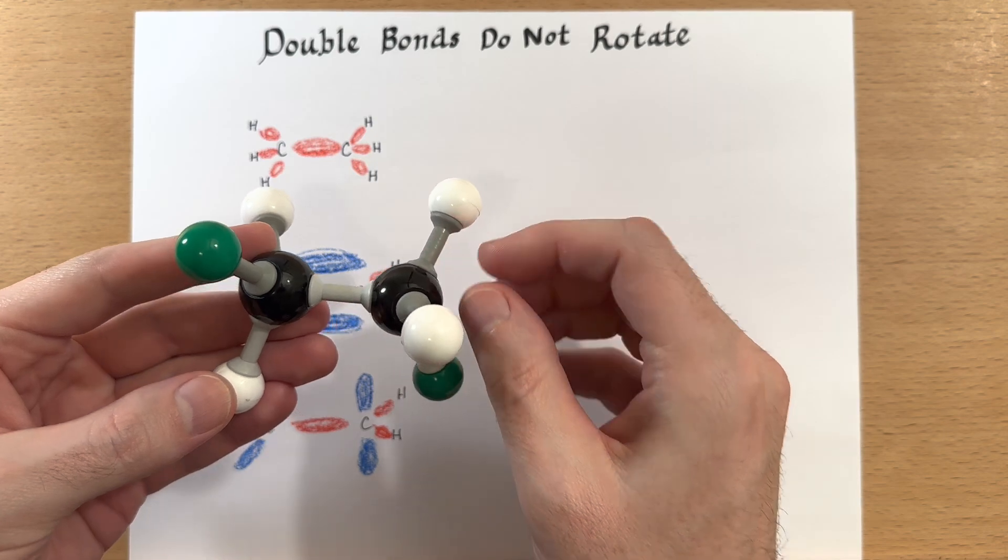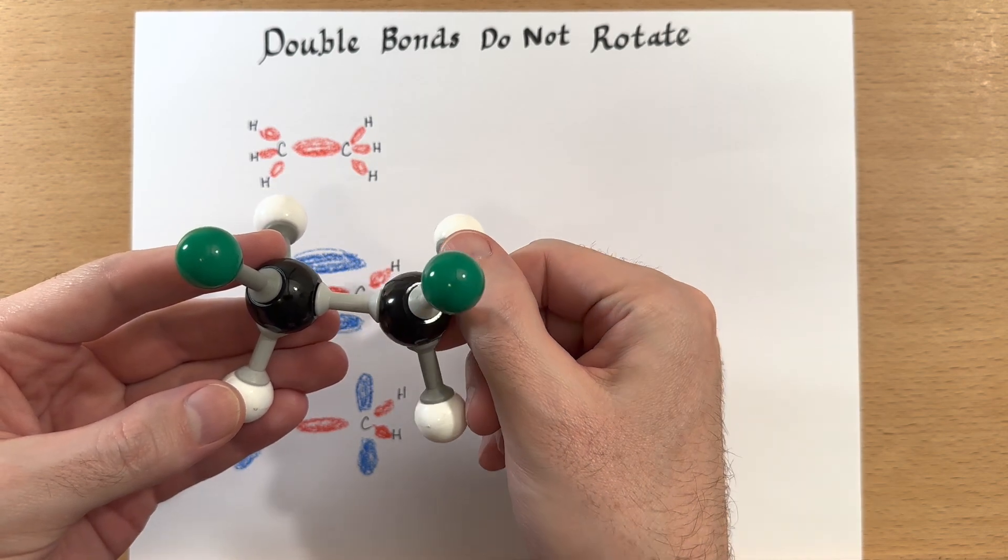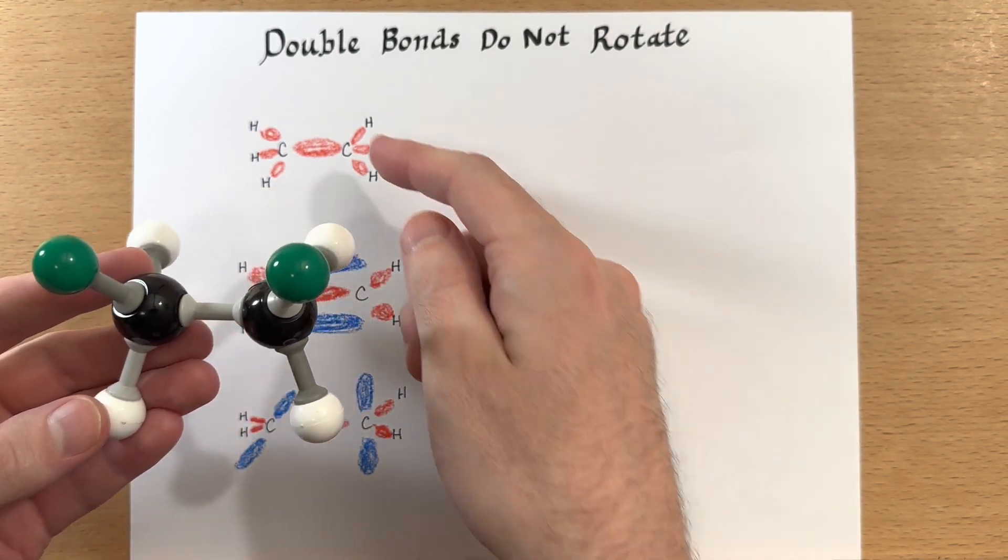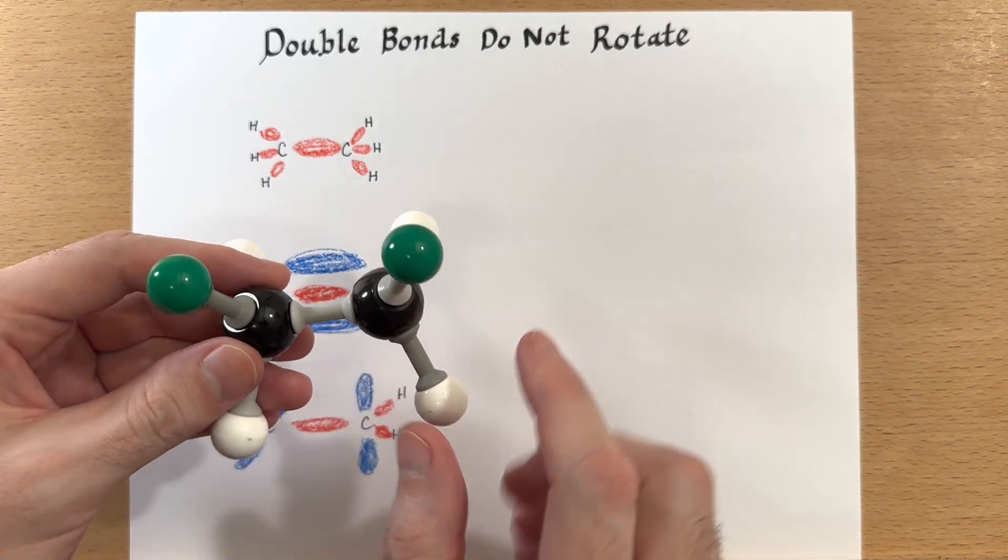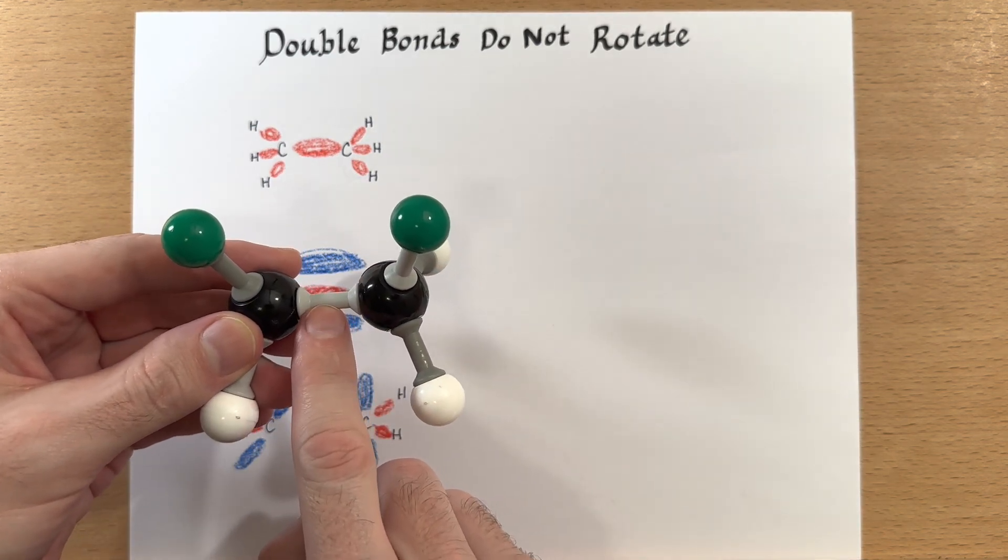So you can notice that the model kit is able to spin around just like in a normal molecule where there's a single bond right here in the middle.